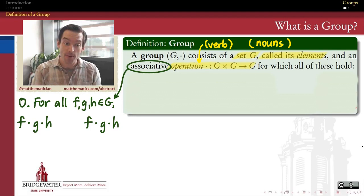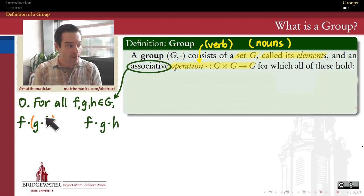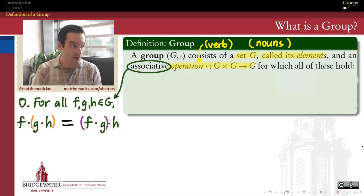The associative property says for this operation, if I operate on three elements, let's call them f, g, and h, then if I group the g and h together and I operate there first, and then I operate by f in the front, or if I group the f with the g, do that operation, and then operate on h afterwards, that the results of those two operations need to be the same.